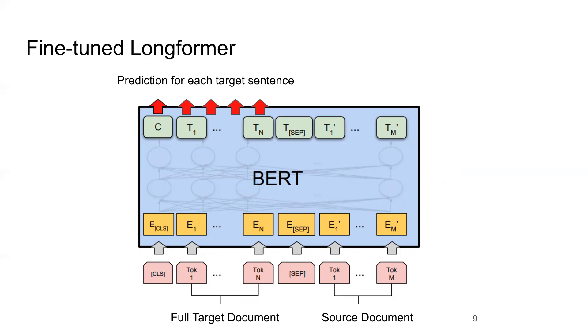What we do is we split the target document up into sentences, we add a special token to separate each one of those target sentences, fine-tune the model just as normal except rather than just pulling out the representation of the CLS token, we pull out the representation of all those special sentence separator tokens for the target document, and then we add a linear layer on top of those to make a prediction for each target sentence.